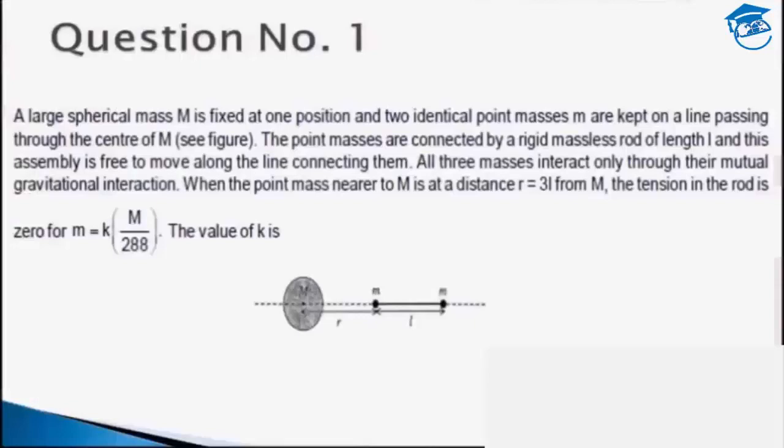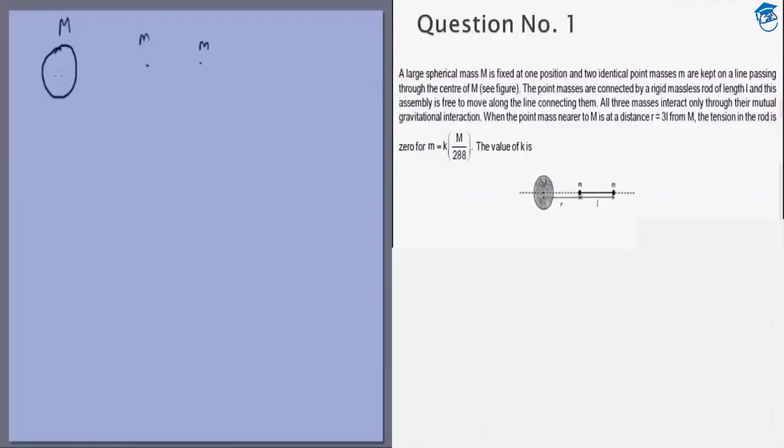The first problem tells us of a spherical mass capital M and two small masses small m each. The first mass capital M is at a distance r from the first small mass and they both have a distance L between them, and the only interaction is gravitational attraction. So the mass capital M will be attracted towards the right by these two. This mass will be attracted towards the left by these two, and this will be attracted both towards the left and towards the right. These two masses are connected by a light rigid rod, and we are given that if r equals 3L then the tension on the rod is zero, and we need to find a relationship between the two masses.